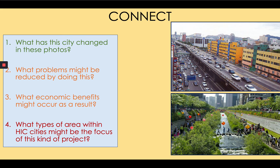Question three: what economic benefits might occur? Since there's less congestion people have higher productivity because they're wasting less time in cars and spending more time at work producing income for themselves and their businesses. Since people are healthier they are more productive — not only physically healthier but their mental health has improved because they're walking amongst nature. Happier people are again more productive. Question four: what types of area within HIC cities might be the focus? A brownfield site — a derelict urban former industrial area — is a common project area, as are places that are unattractive, heavily polluted, or have significant problems such as air pollution or congestion.